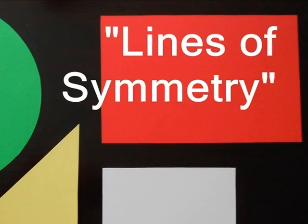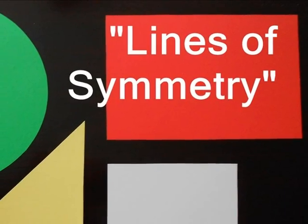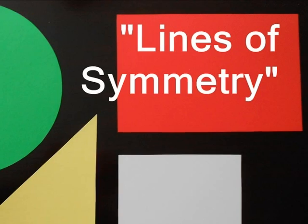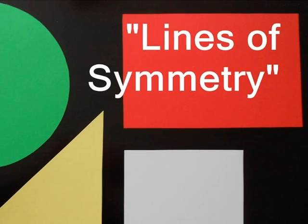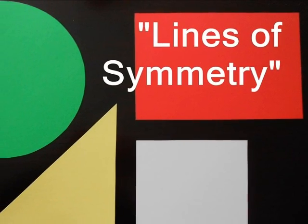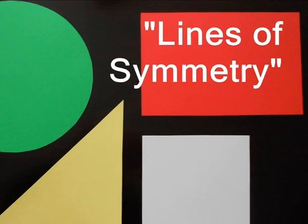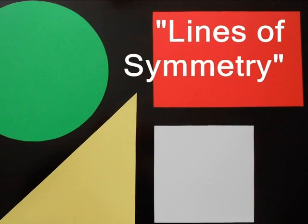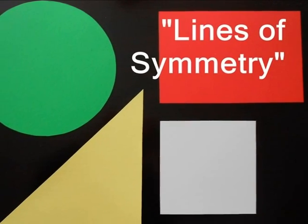Today we're going to talk about lines of symmetry. We're going to first start by looking at a red rectangle. We also have a white square, a yellow triangle, and a green circle.